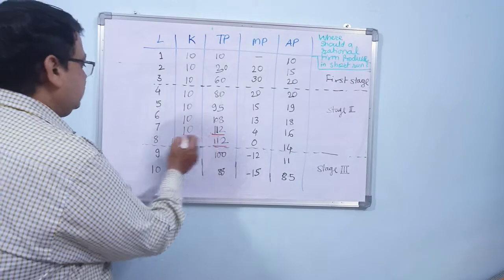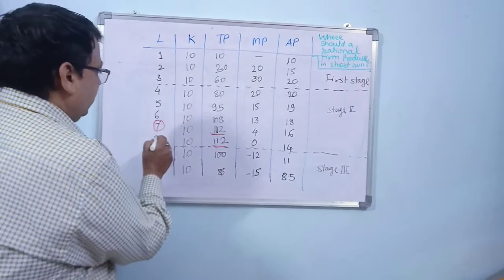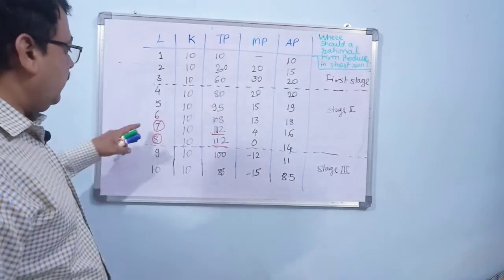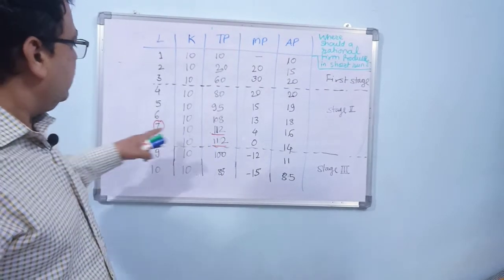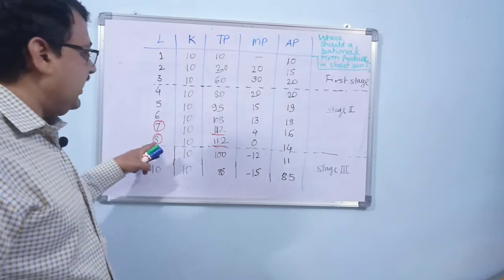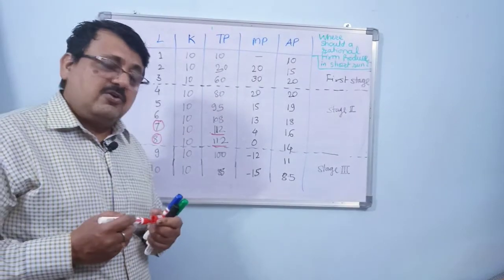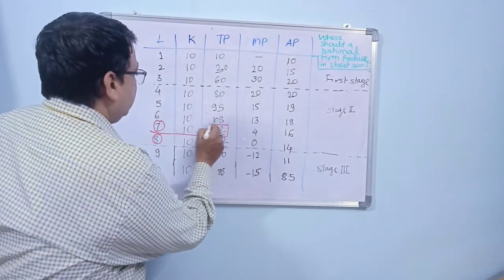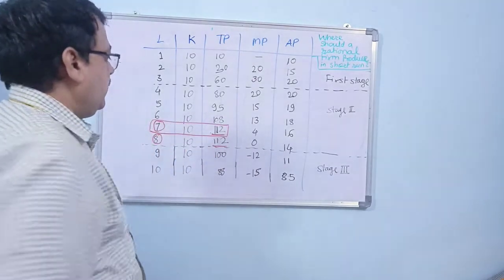For this place you have to have seven number of labor and here you require eight number of labor. To produce the same amount of production you require seven labor and here eight labor, so obviously you will go for this one where you require seven labor.